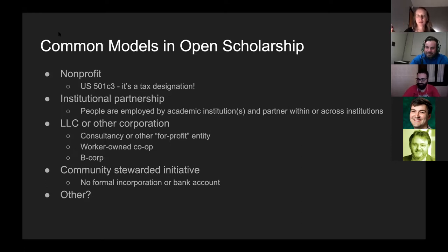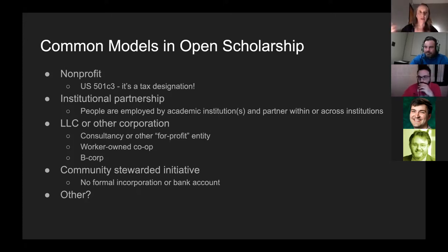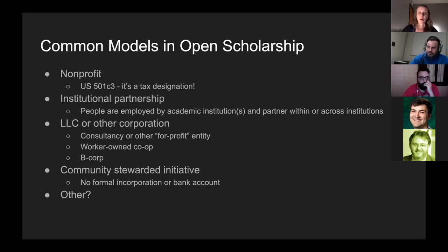Now let's look at common models in open scholarship, open data, and open source. Starting with the non-profit: in the US, a non-profit is just a tax designation. In the US, if you're going to go into a non-profit model, it's more straightforward to do that right away. Fiscal sponsorship is just a term for when you partner with a non-profit and they administer your funds.